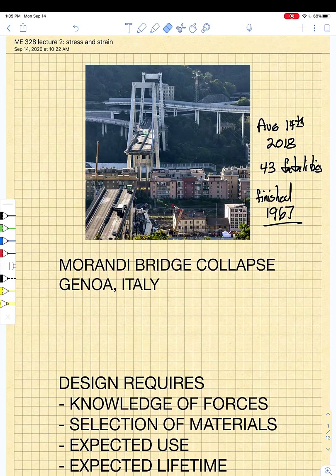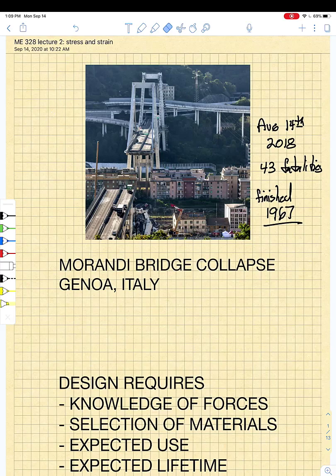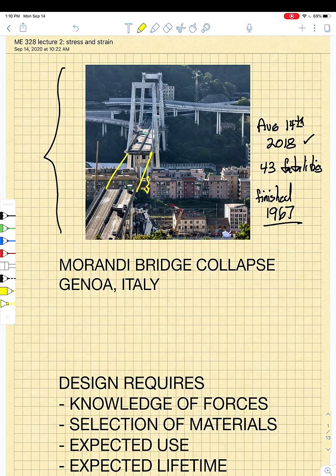The first thing I do is show you here this picture of the Morandi Bridge, which is in Genoa, Italy, and it collapsed on August 14th of 2018 and killed 43 people in the process. The span that is missing right in here fell some 150 feet down to the neighborhood below it. Now, why did this happen?